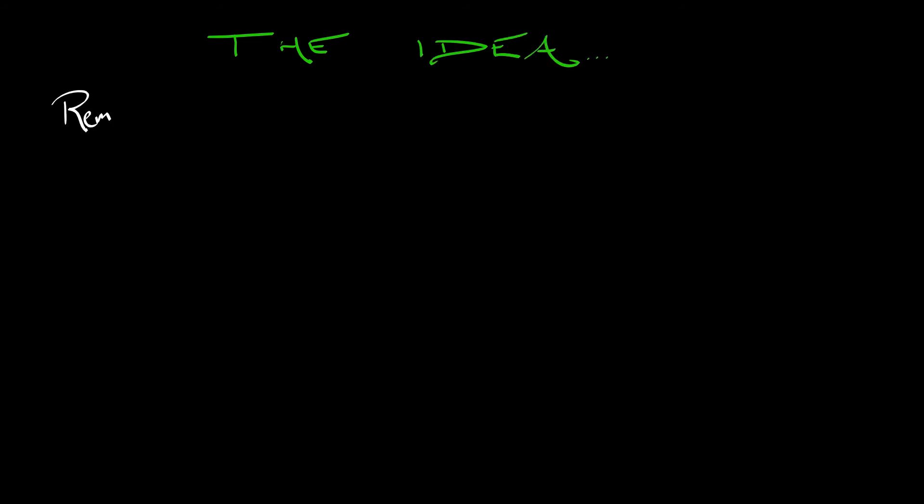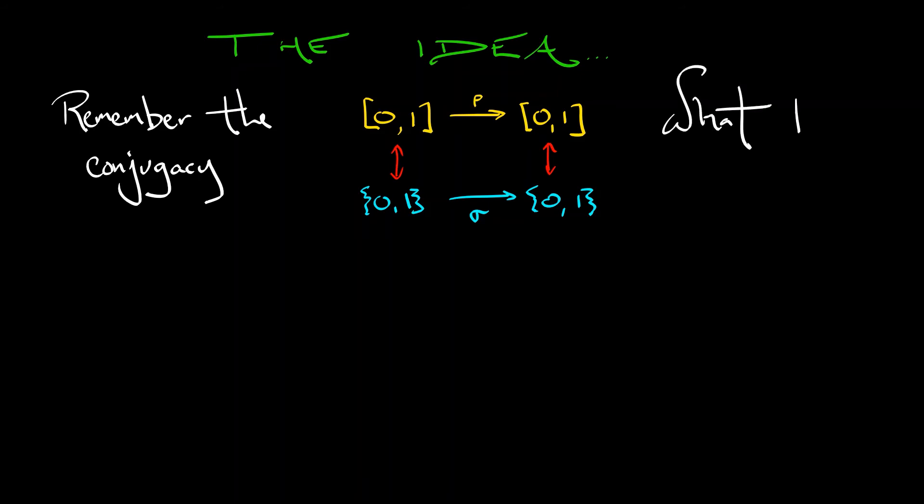Remember how we have set things up in terms of the topological conjugacy between the Poincaré map on the interval from zero to one and the shift map on the space of semi-infinite sequences in digits zero and one. Now, what does this mean?